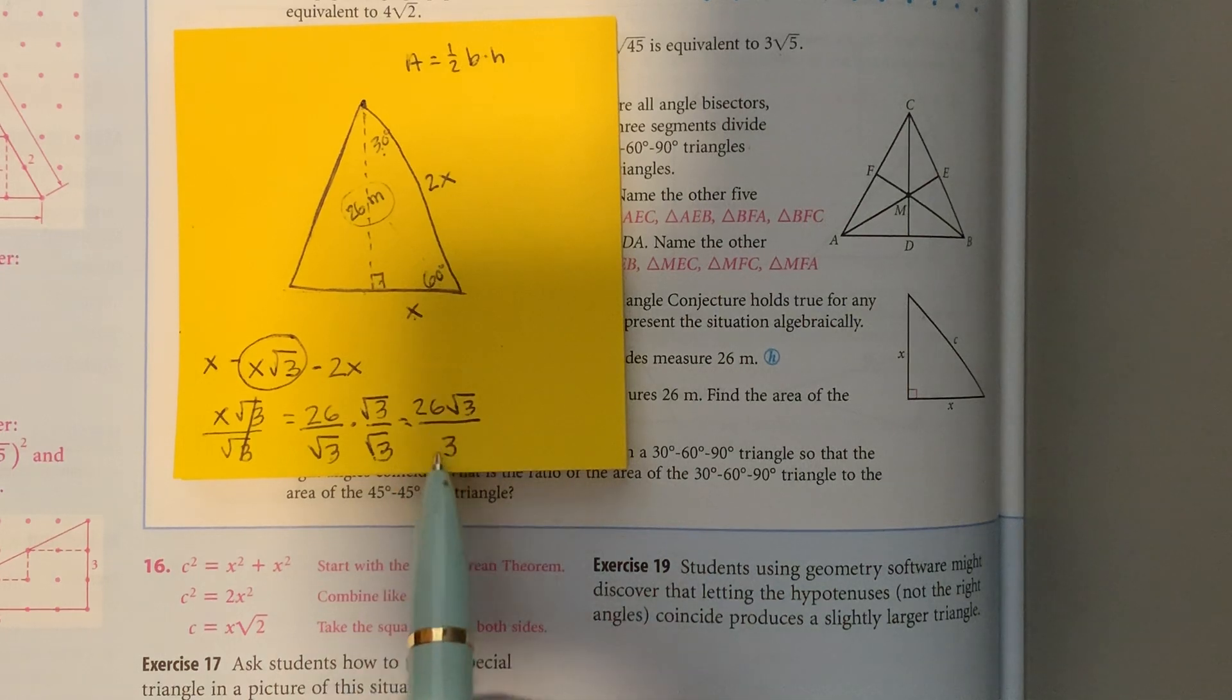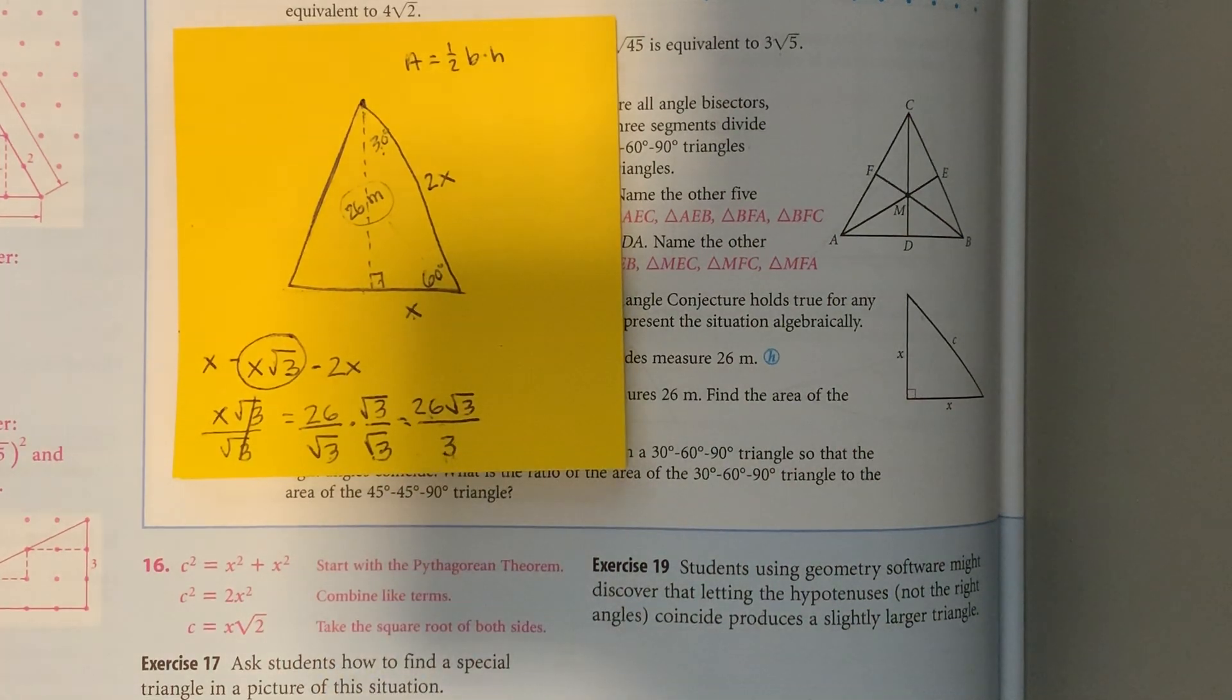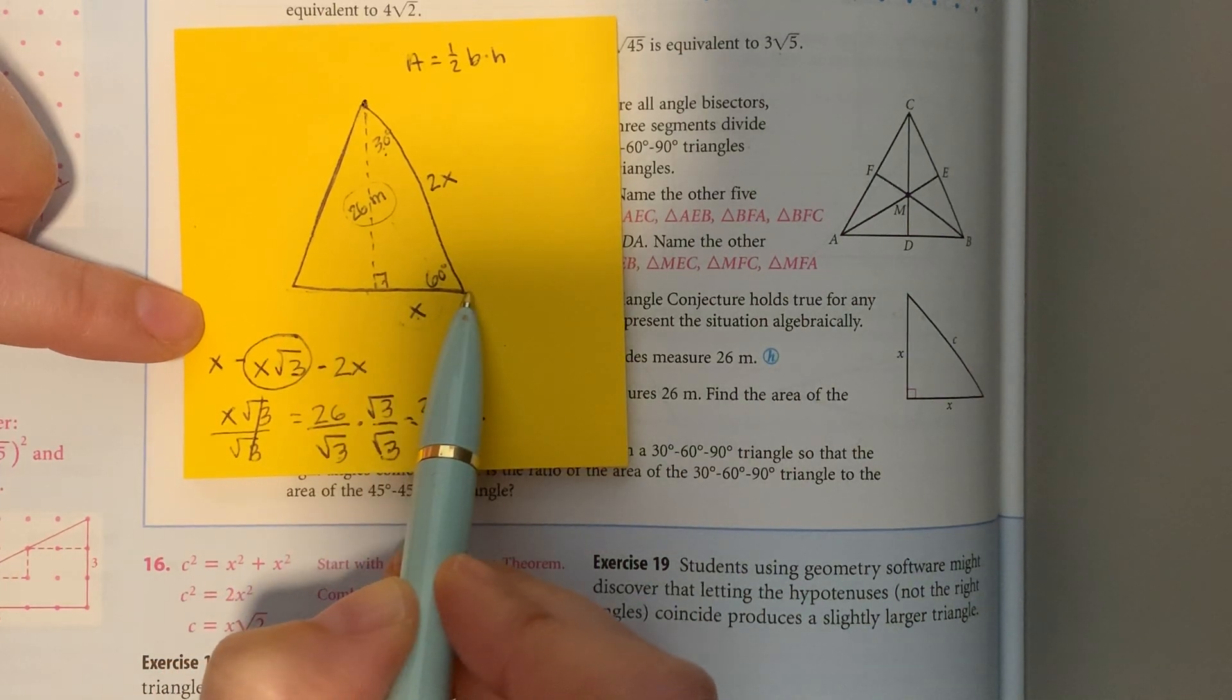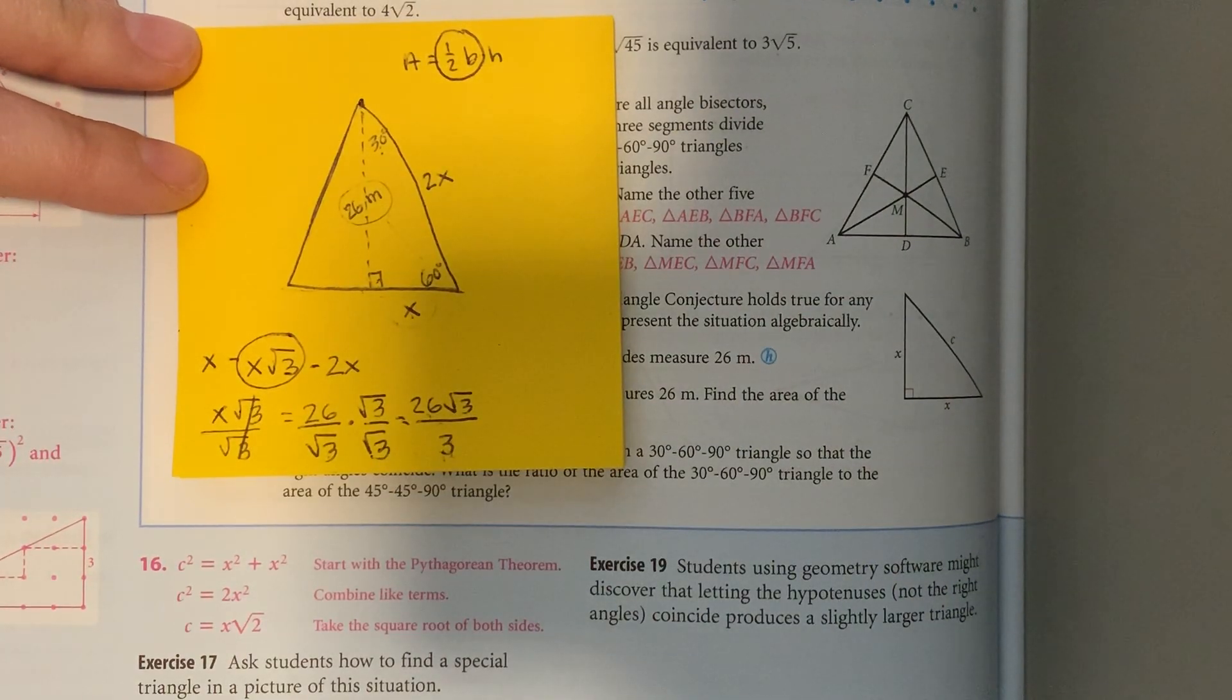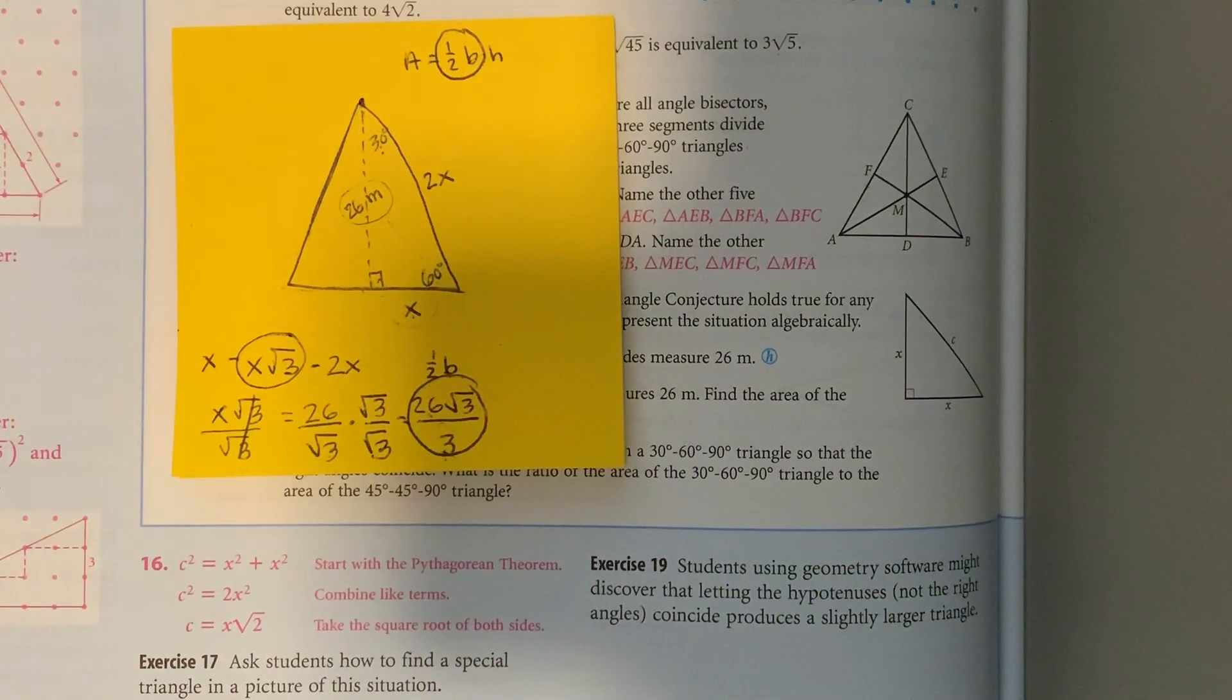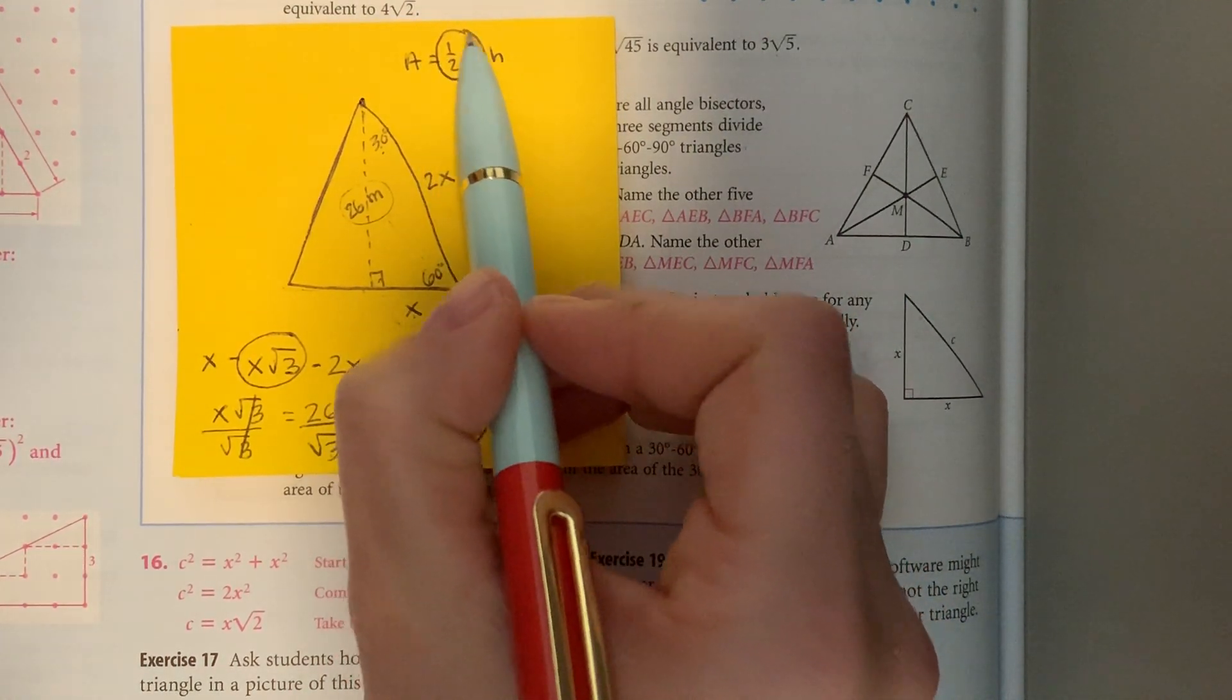This fraction can't be simplified further since 3 doesn't go into 26. Now, this is x, which is only half of the base. But if you look at the area formula, we only need half of the base anyway. So we'll plug in 26 square root of 3 over 3 for half the base.